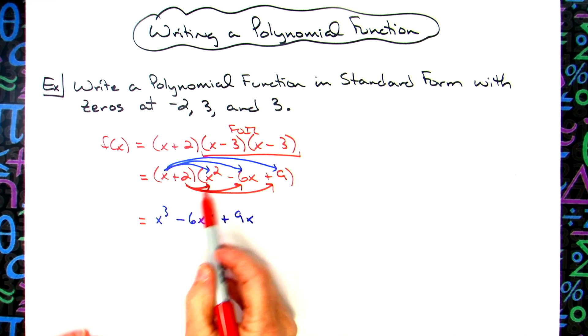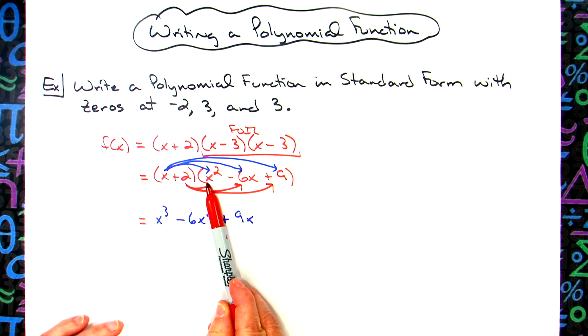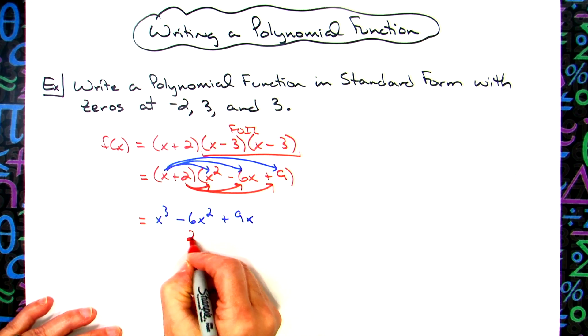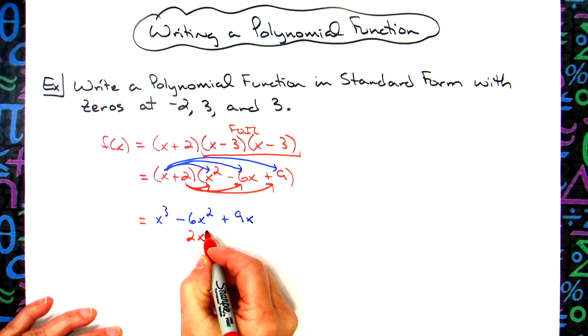Now when I distribute the two, two times x squared, that's going to give me a two x squared. So I'm going to go ahead, since I know I'm going to have to add like terms, I'm going to line it up underneath here. So I'm going to have a positive two x squared.